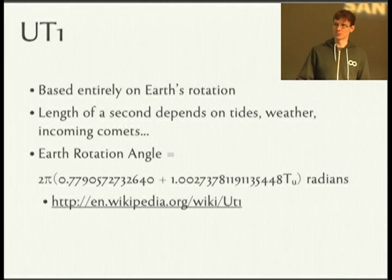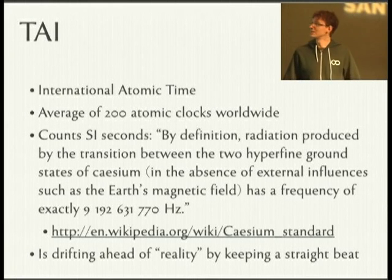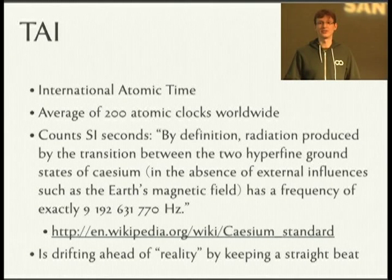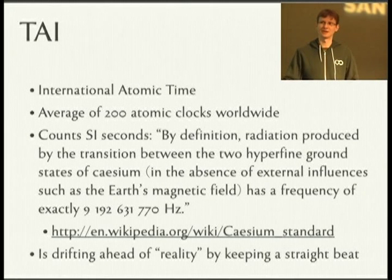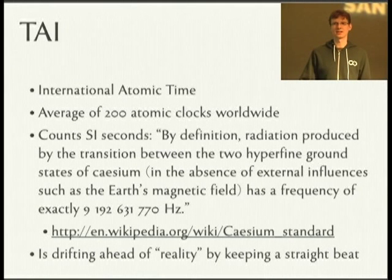So UT1 is not actually a very reliable measure, but it's interesting because on the prime meridian the sun should be directly overhead at noon by definition. Which brings us to TAI, International Atomic Time, which counts an even SI second as defined by atomic clocks. They have approximately 200 worldwide, averaged and corrected for their height above sea level, because relativistic effects are actually noticeable. And it drifts ahead of reality because the SI second is, on average, shorter than a UT1 second.